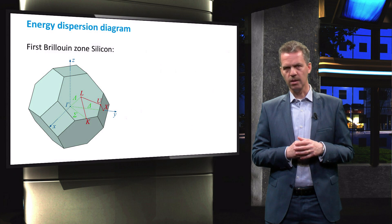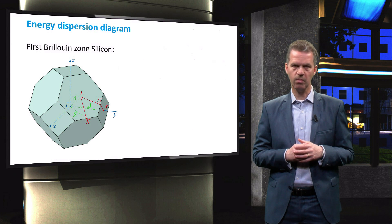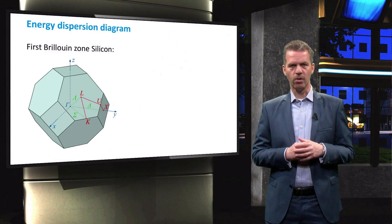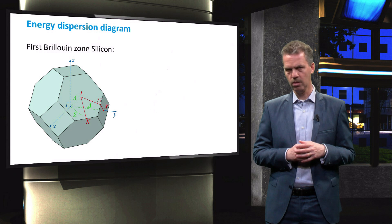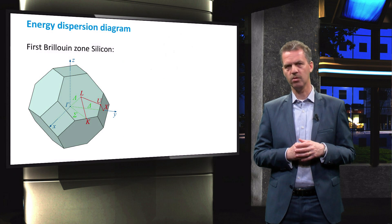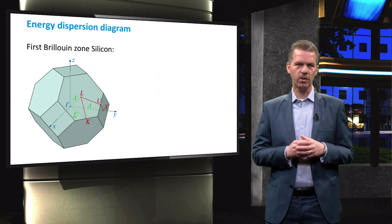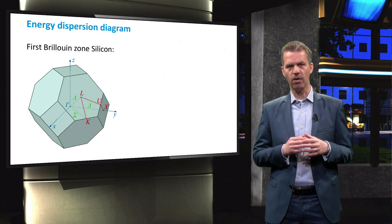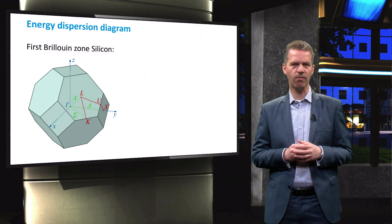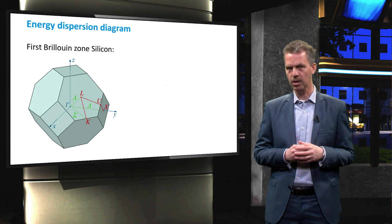In solid-state physics, it is common practice to consider the so-called reciprocal space. In reciprocal space, or k-space, the first Brillouin zone represents the unit cell as shown in this illustration. The electronic band structure of a periodic material such as crystalline silicon is obtained by finding solutions to the Bloch wave functions in the first Brillouin zone, as these solutions are proven valid for the entire medium.